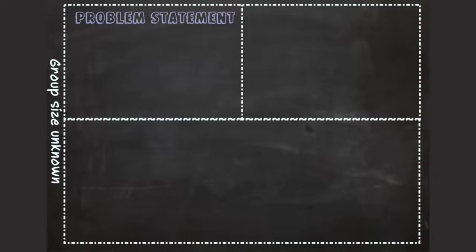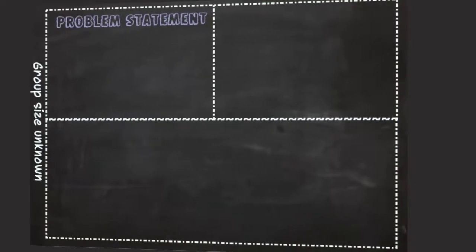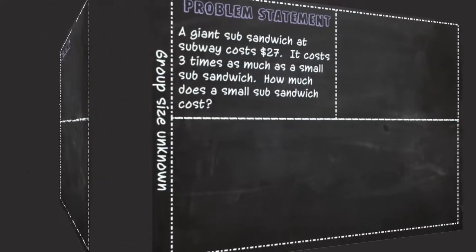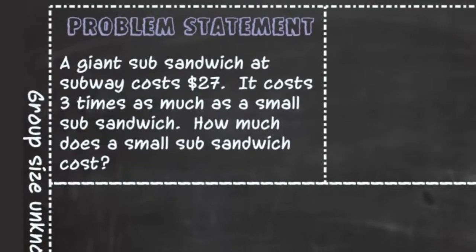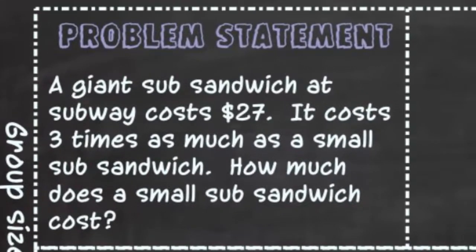When interpreting multiplication equations as comparisons for an unknown group size, you will be given a problem statement like a giant sub sandwich at Subway costs $27. It costs three times as much as a small sub sandwich. How much does a small sub sandwich cost?